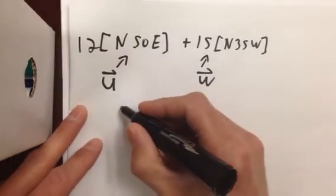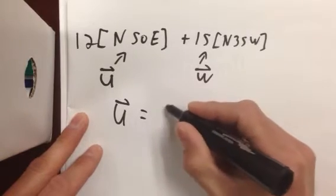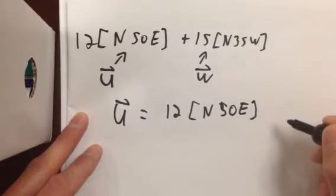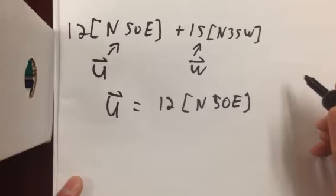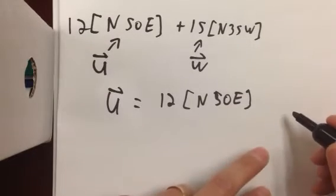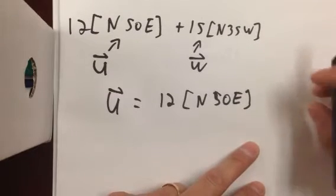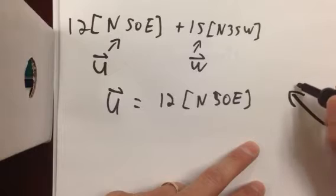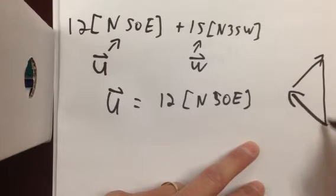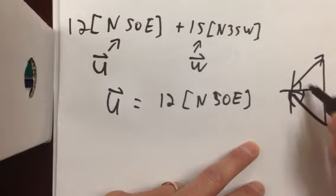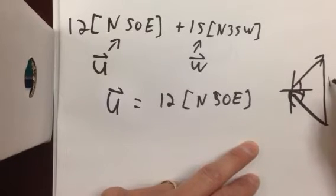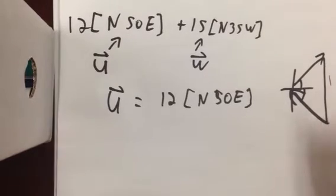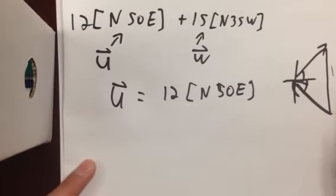Okay, so vector u is 12 north 50 degrees east. And if I was to add these two by putting them tip to tail, as I've shown you before, we're going to take our vector that's north east, we're going to take our vector that's north west, and we're going to figure out what angles go inside of here, use the cosine law to find the resultant, and then work backwards to find the angle. The work for doing this component by component is a bit simpler.